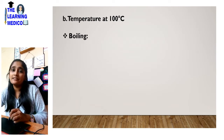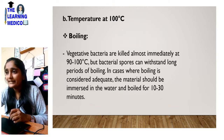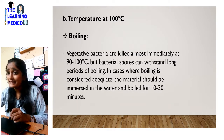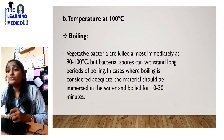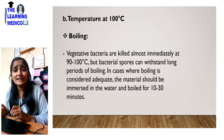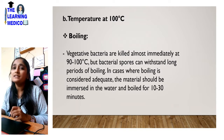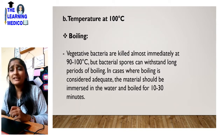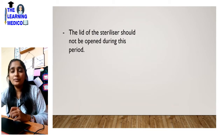Next is the temperature at 100 degrees Celsius, which is the boiling point. Vegetative bacteria are killed almost immediately at 90 to 100 degrees, but bacterial spores can withstand long periods of boiling. In cases where boiling is considered adequate, the instruments should be immersed in water and boiled for 10 to 30 minutes. The lid of the sterilizer should not be opened during this period.